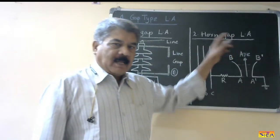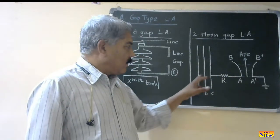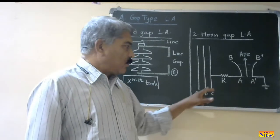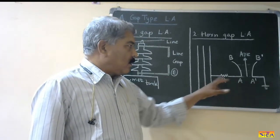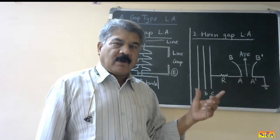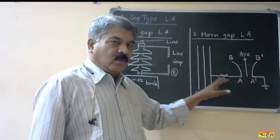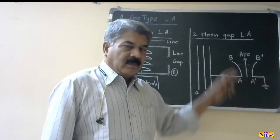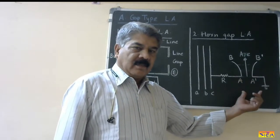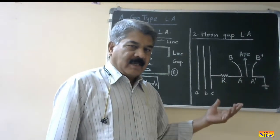The second type is the horn gap type lightning arrester. Here I have shown three lines, and this type of lightning arrester is connected in each line. These are again two rods bent in the form of a horn — one is connected to the line through a resistor and the second is connected to the ground. The insulating medium here is also air, with no nonlinear resistance or any additional device.